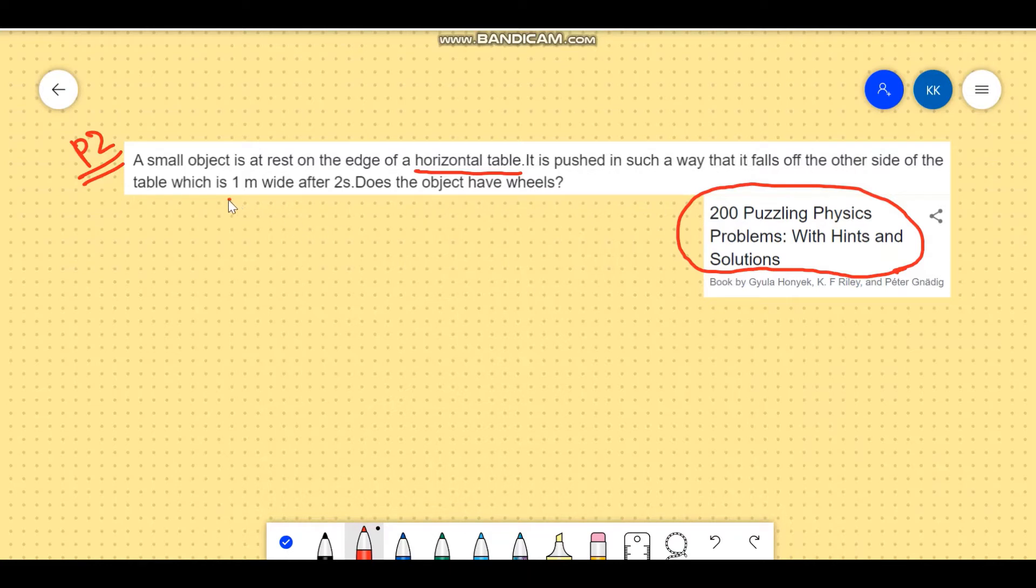Let's say this is a table, this distance is one meter. We push the object from here and it fell off this edge. So what conclusions can we draw? Initially it was at rest but we gave it some velocity by pushing it, so let's say it has an initial velocity vi.